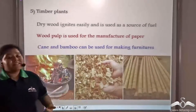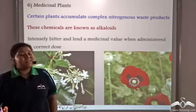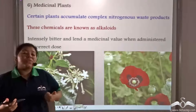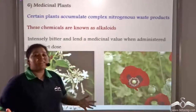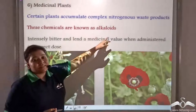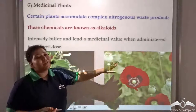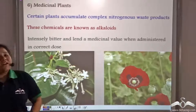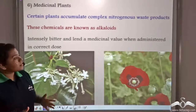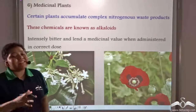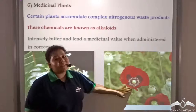These are the ways plants help mankind and make our life very comfortable. Not only does plants make our lives easier, but they are also life givers. Many plants accumulate complex nitrogenous waste products known as alkaloids, which are intensely bitter in taste and lend medicinal value when administered in proper doses. For example, cinchona accumulates the nitrogenous waste product quinine, which is anti-malarial, and the poppy plant accumulates the alkaloid morphine, which relieves pain.